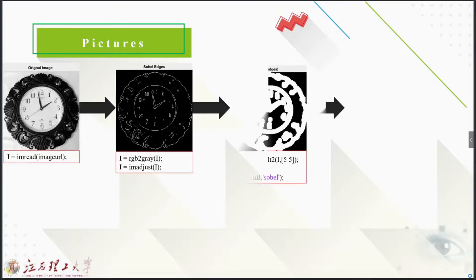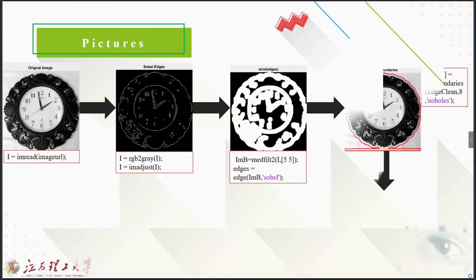This is the stereo edge detection. Here, these are the image boundaries. If we calculate the image, we can isolate the clock from the rest of the image. In this picture I just isolate that clock from the rest of the image.